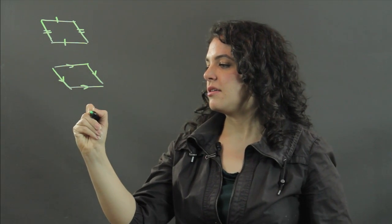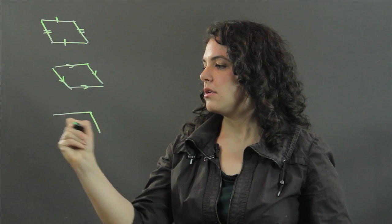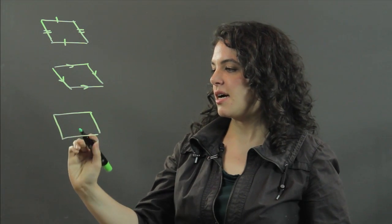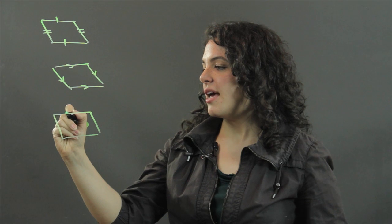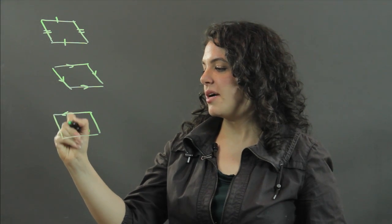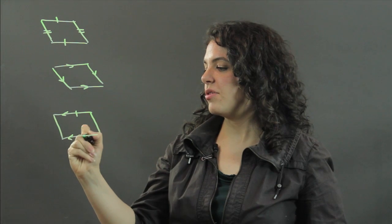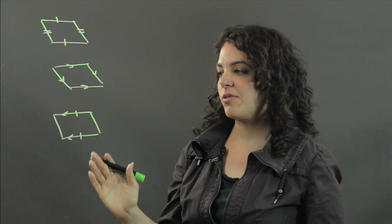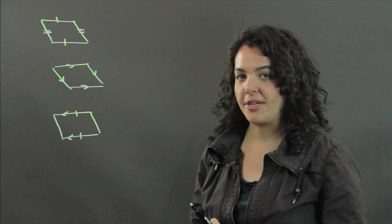A third test, you only need to look at one pair of opposite sides. Take the top and the bottom, for example, and if they are both parallel and congruent, for only one pair of opposite sides, both parallel and congruent, then your quadrilateral is a parallelogram.